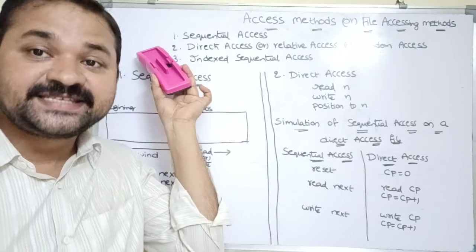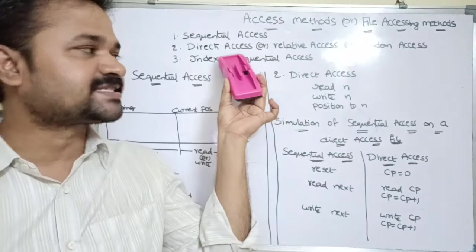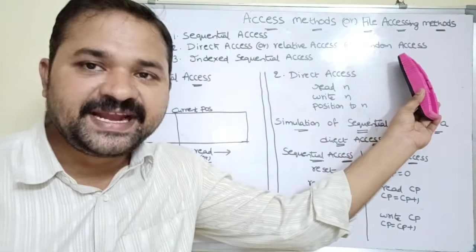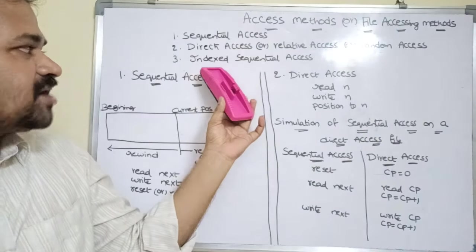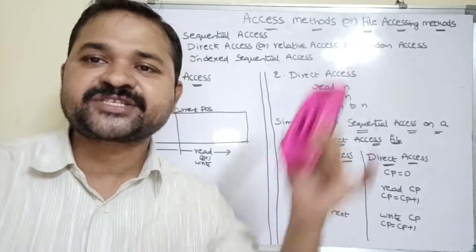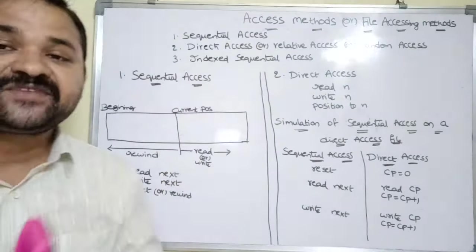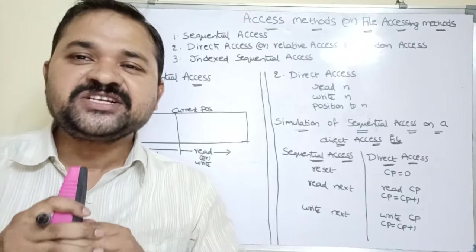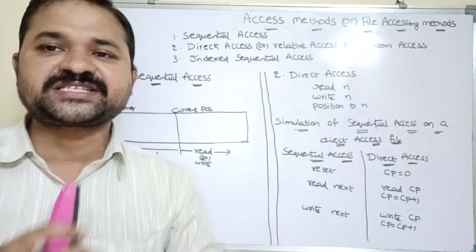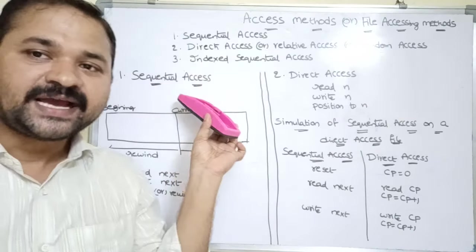The first method is sequential access, the second one is direct access or relative access or random access, and the third one is indexed sequential access. Now let us discuss all these methods one by one. Sequential access is the simplest method of all three. The name itself specifies the meaning.